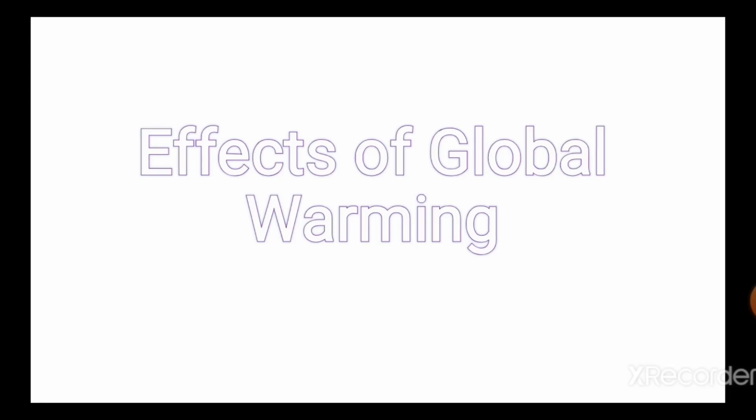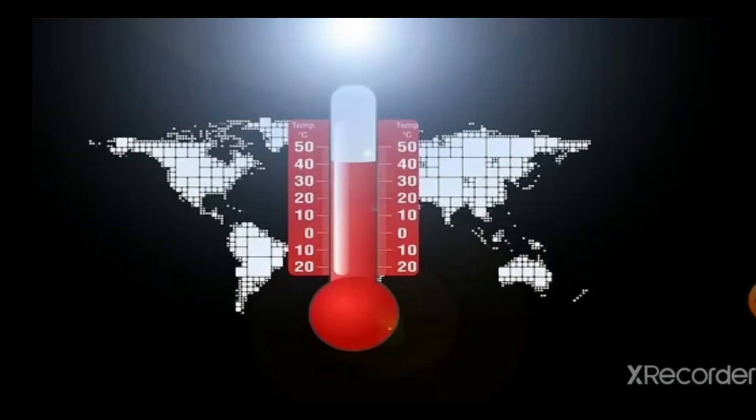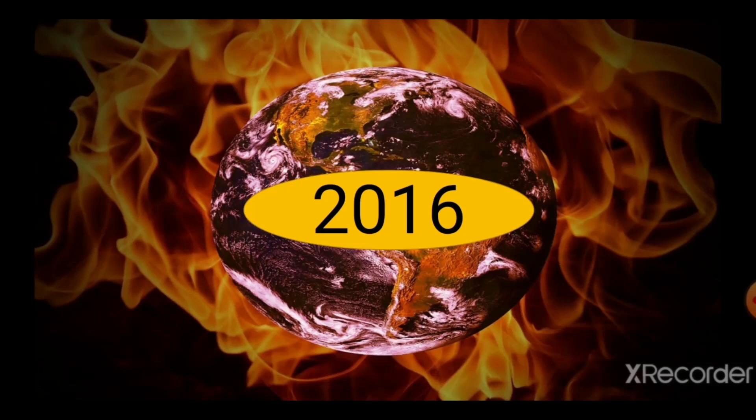Global warming is affecting the environment in various ways. There is an increase in global temperature which is affecting the health of all animals. The planet's average surface temperature has risen about 2 degrees Fahrenheit during the last year. 2016 was the warmest year on record.